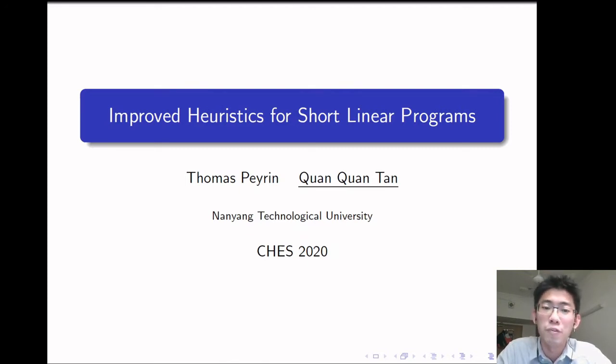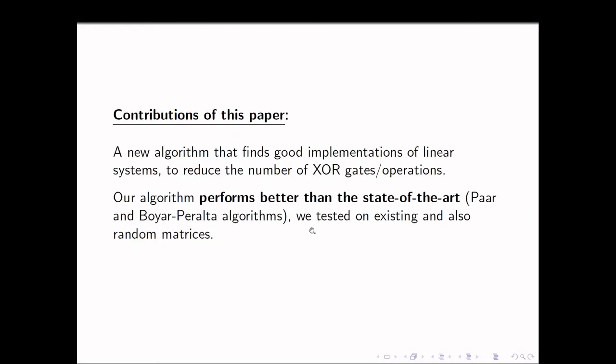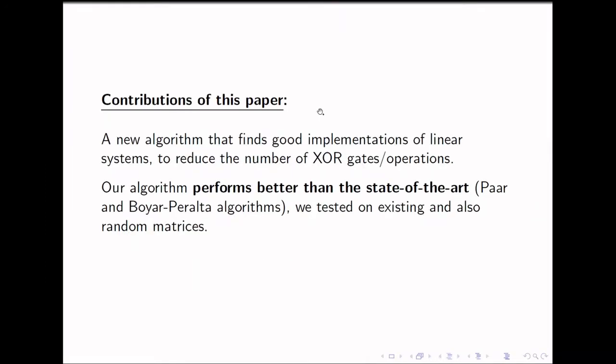This is a joint work with Pei An at the Nanyang Technological University. In this paper, we introduced a new algorithm that finds good implementation of linear systems to reduce the number of XOR gates required. We compared our algorithm to the state-of-the-art algorithm such as PARS as well as Boya-Payatta's algorithms, and they performed better when we tested them on existing as well as random matrices of different densities.